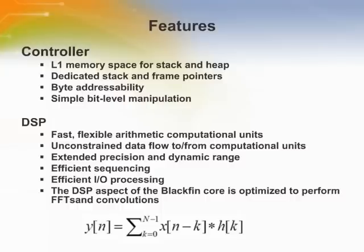From a DSP perspective, the Blackfin has fast computational capability, but that isn't very useful unless data can be moved in and out efficiently as well. Unconstrained data flow is another key feature. Many DSP operations are sums of products, so intermediate sums require high dynamic range, making extended precision accumulators another key feature. Efficient sequencing — handling interrupts, looped code, and branch operations efficiently — as well as efficient I/O processing are also supported. DMA offers an efficient way of communicating with the outside world, and the DSP core is optimized to perform operations such as FFTs and convolution.